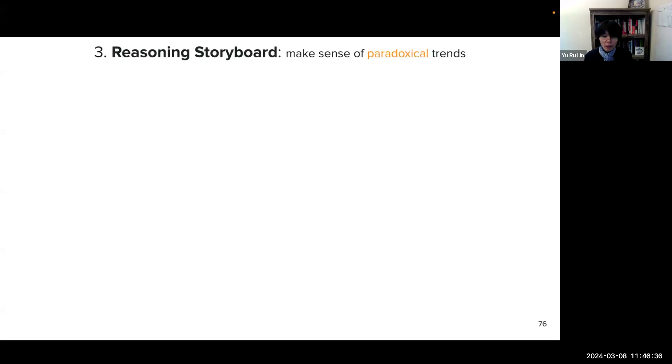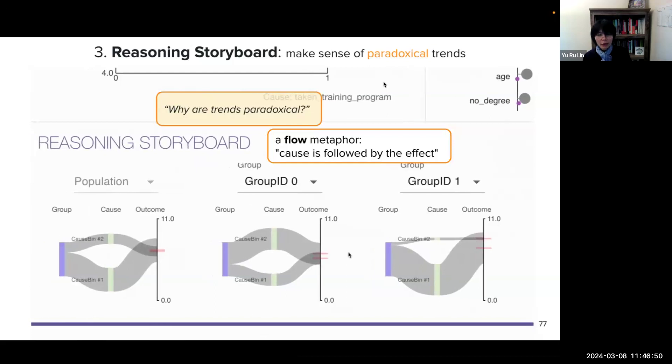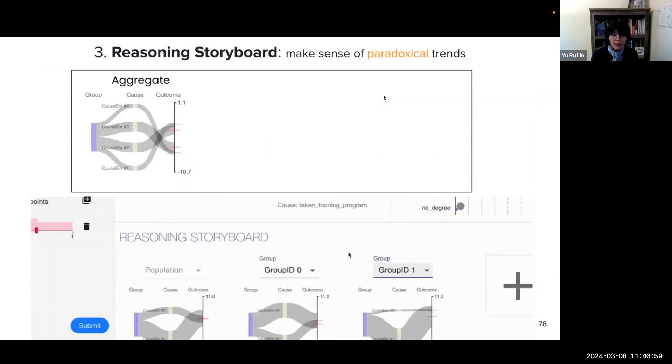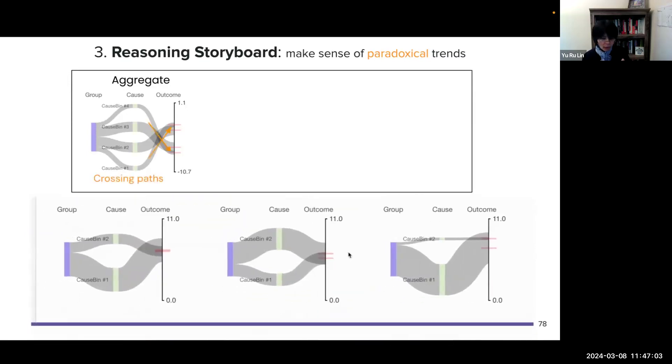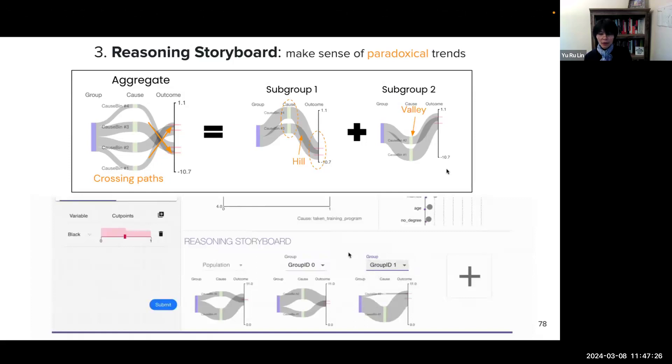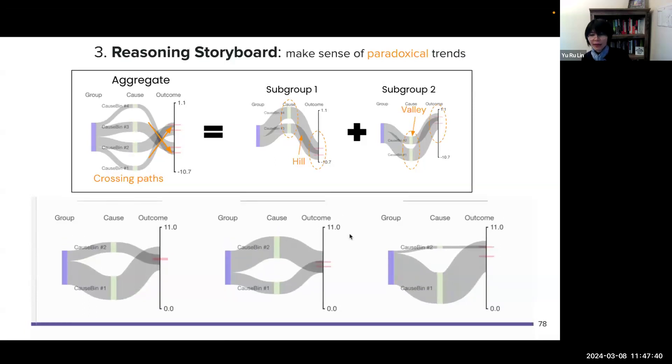The reasoning storyboard helps answer, why are trends paradoxical? So we provide intuitive paradox reasoning using this flow metaphor, which visually conveys the cause is followed by the effect. So now, if we see a cause and outcome, of course, all groups have these crossing patterns, these crossing paths. So there must be some subgroups shown as healing, and this means that cause leads to a negative outcome. And there must be some subgroups shown as valid, meaning that the cause leads to a positive outcome. So these flow patterns can tell whether there's a paradox, and if so, it's because of a mixture of negative and positive effects from different subgroups.